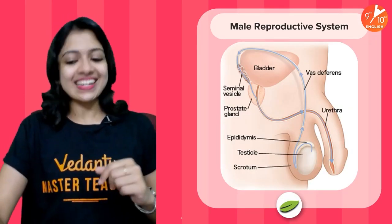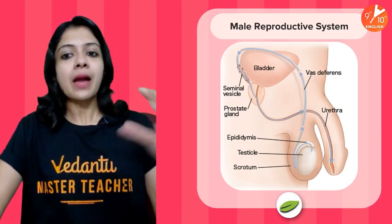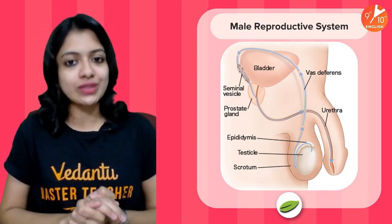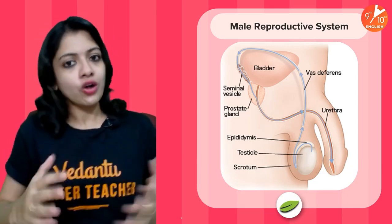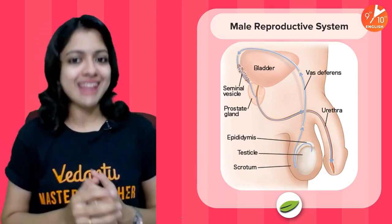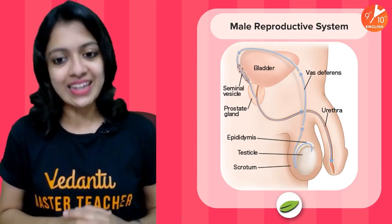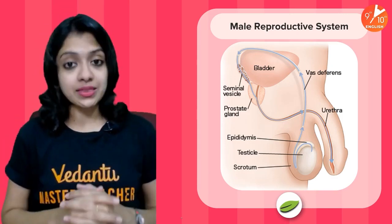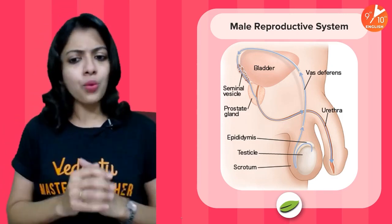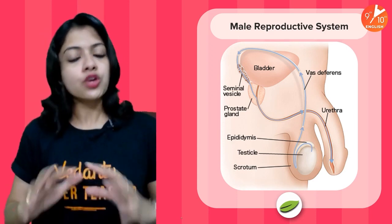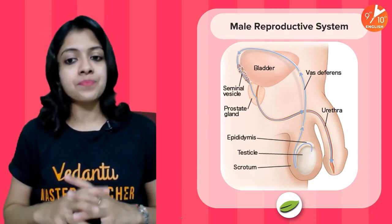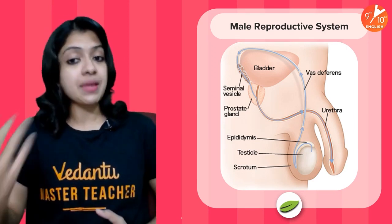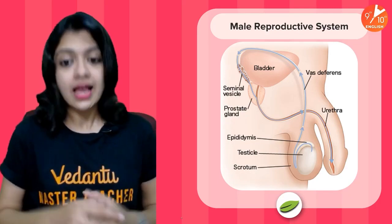Let's get started with the male reproductive system — jumping directly into the content, which is exactly what we intend to do in this series. We know that human beings exhibit sexual dimorphism, meaning there are separate male and female individuals.